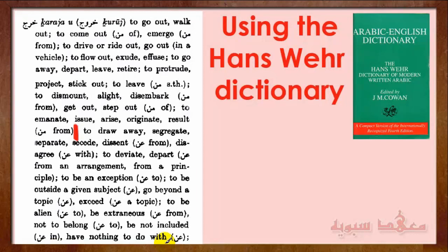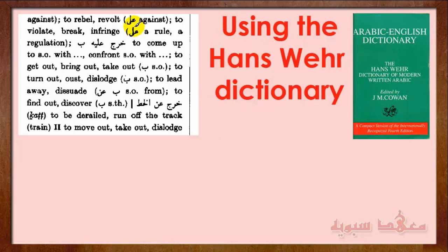So the core meaning is to come out or draw away with عن. Now another meaning: here we have على — against. خرج على — now على is a حرف استعلاء, indicating 'over' something. So خرج على means to rebel, to revolt, to violate, to break or infringe upon a rule or regulation. For example, if someone wants to revolt against the government, we say خرج على الحكومة — they rebelled or revolted against the government.